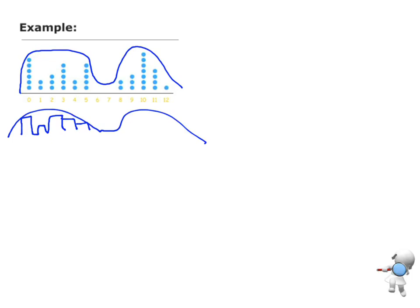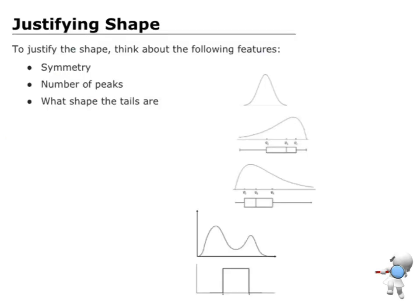Then what you're going to do is identify what shape it most looks like. The key thing that I notice there is that I've got one peak here on the left and another peak here on the right, so this would be a bimodal distribution. Now for the merit, I need to be able to justify that.